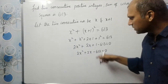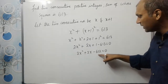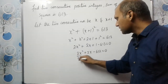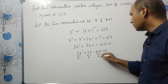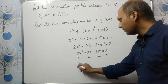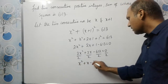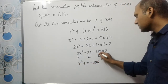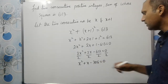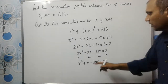Can we divide both sides by 2? We have 2 as a common factor throughout, and 612 divided by 2 is 306. So dividing both sides by 2 gives us x squared plus x minus 306 equals 0.